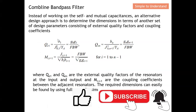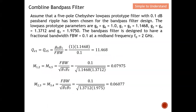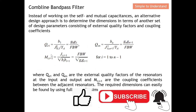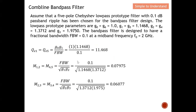For Qe1: g0 = 1, g1 = 1.1468, FBW = 0.1, giving Qe1 = 11.468. For M12, using g1 and g2, we get approximately 0.07978. For M23, changing the denominator to g2 and g3, we get 0.06077. Once we have all these values, we are ready to design the comb line band pass filter.